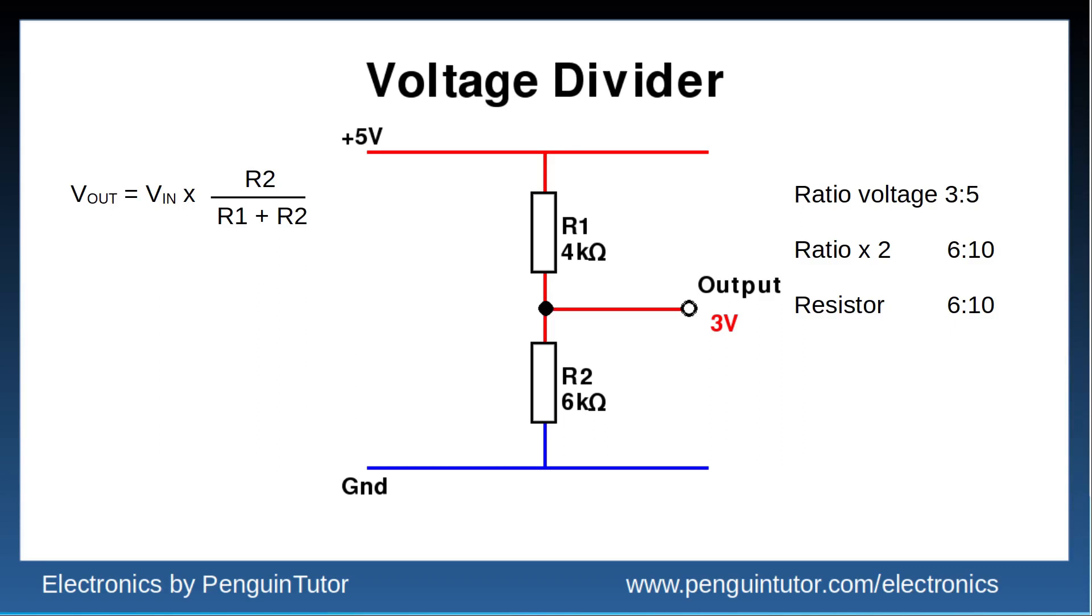If you multiply both sides of the ratio by 2, then we have a ratio of 6 to 10. So we need to maintain that 6 to 10 ratio across the resistors, with R2 being the 6, and the sum of both resistors for the 10. Assuming 10 kilo ohms in total, R2 is 6 kilo ohms, and as they need to add up to 10 kilo ohms, that makes R1 4 kilo ohms.